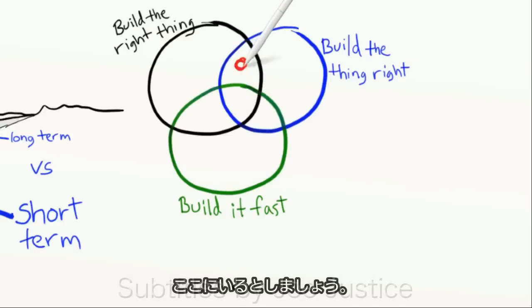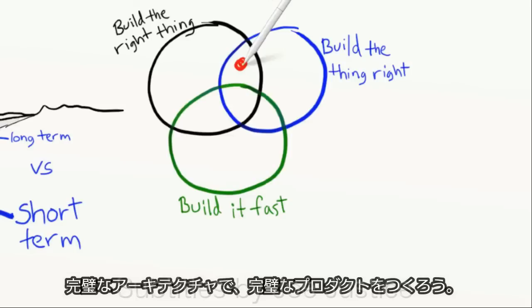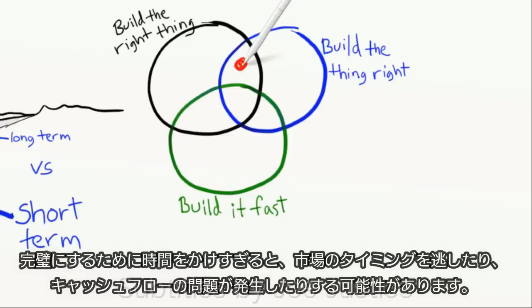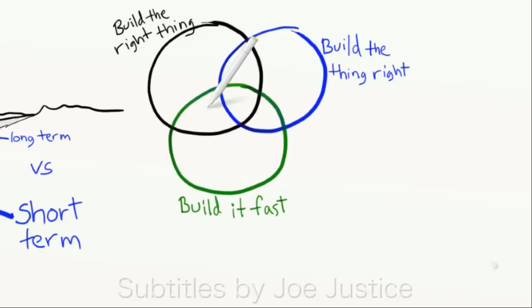Suppose we are here, trying to build the perfect product with the perfect architecture. If we spend too much time trying to get it perfect, we may miss the market window or run into cash flow problems.